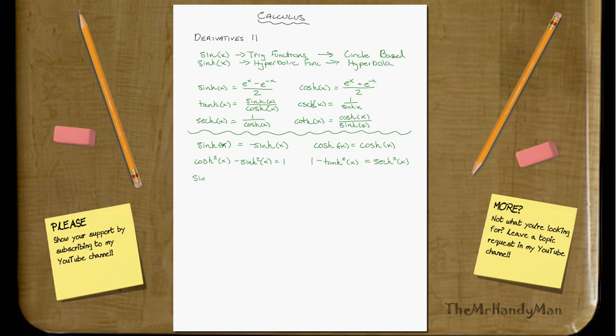One minus tanh squared x equals secant squared x. And the final two that I can remember are just the additive ones. This one, for example.